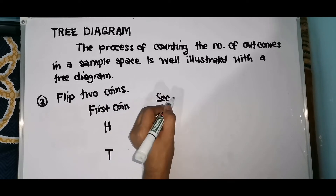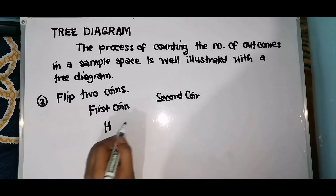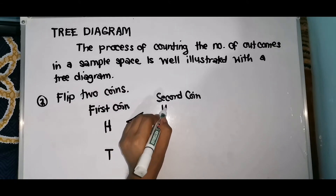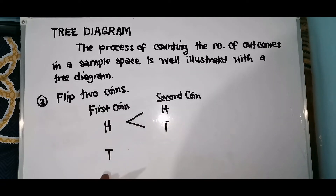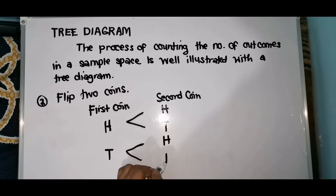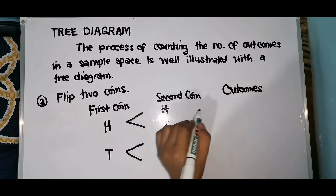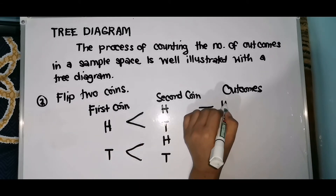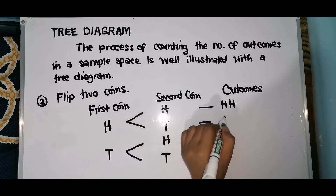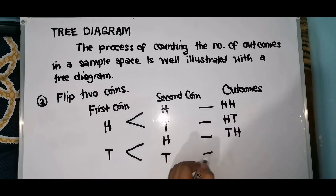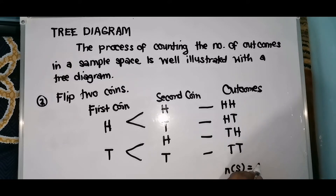For the second coin, if the first coin lands heads, the second coin can still land head or tail. And if the first coin lands tails, the second coin can again land head or tail. So combining all outcomes, we have: head-head, head-tail, tail-head, and tail-tail. That gives us a sample space, and the number of S is equal to 4.